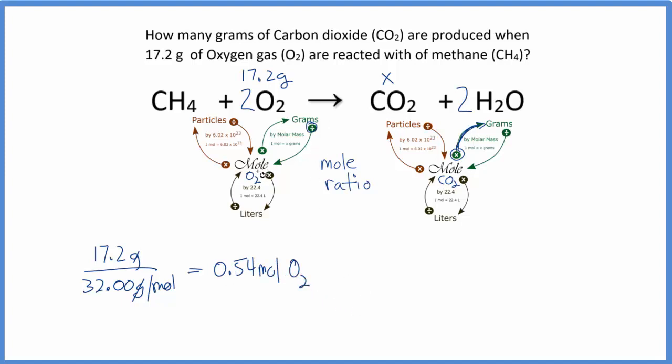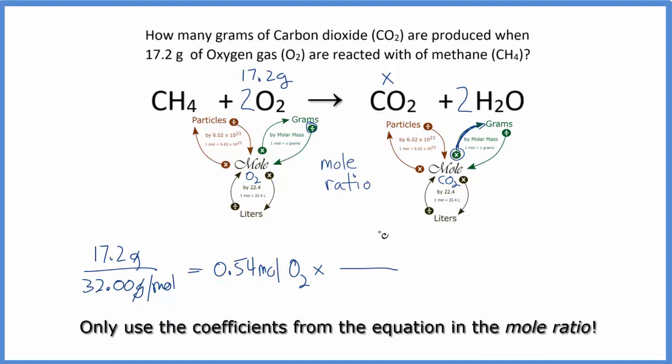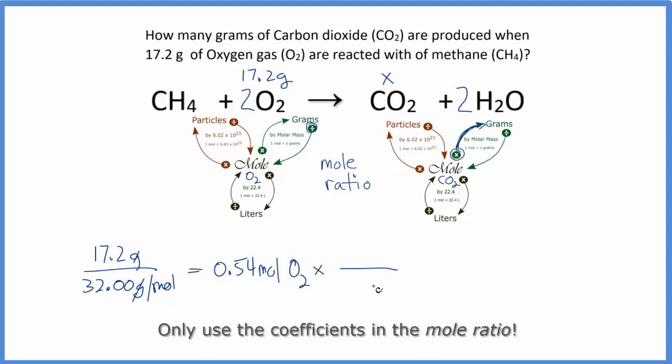We'll be left with moles, and we'll have 0.54 moles of oxygen molecules. So we've changed to moles of oxygen, and now we need to multiply by our mole ratio. We get our mole ratio from the balanced equation, these coefficients here. And this is the only time we use the coefficients. We don't use it when we're changing from grams to moles or with the molar mass. The only time we use the coefficients is in the mole ratio.